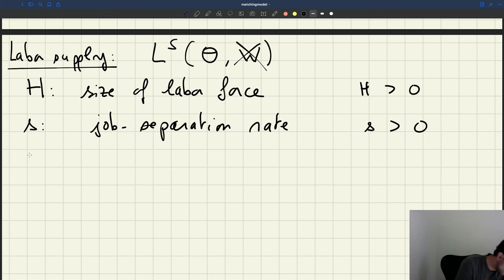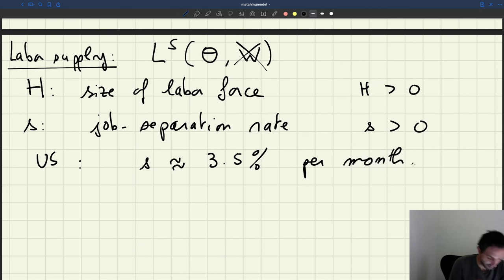So if you remember what I showed you in the previous lecture, just to get a sense, like what is s in the real world? Well, in the US, s is roughly, you know, 3.5% per month. That's just to put a number behind this parameter. So it's roughly 3.5% of the people who have jobs who lose their job every month.